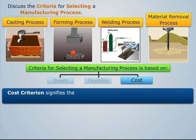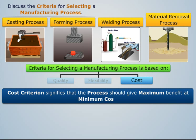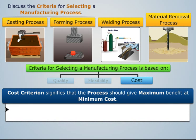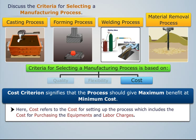The cost criterion signifies that the process should give maximum benefit at minimum cost. Here, cost refers to the cost of setting up the process, which includes the cost for purchasing equipment and labor charges.